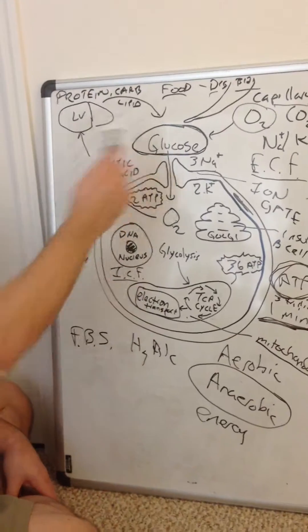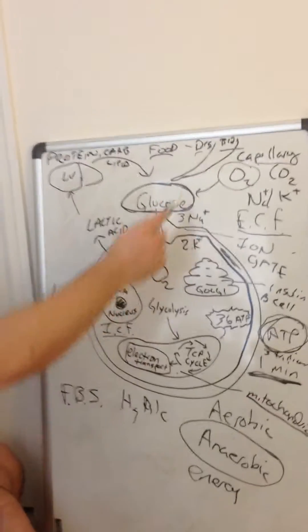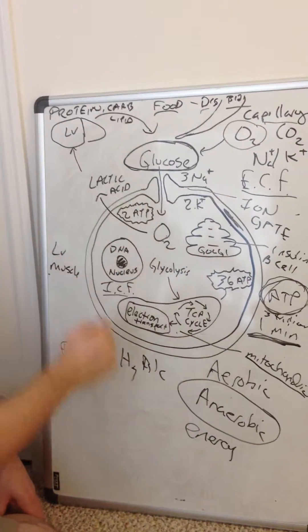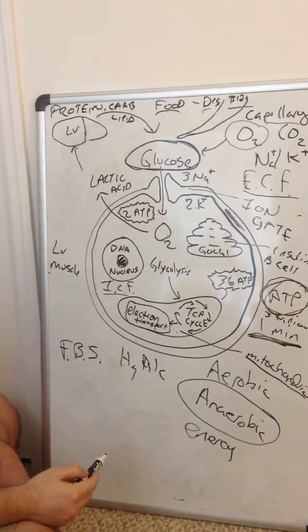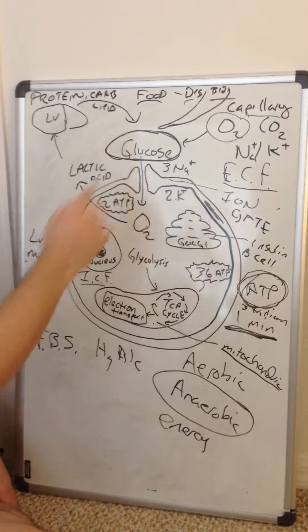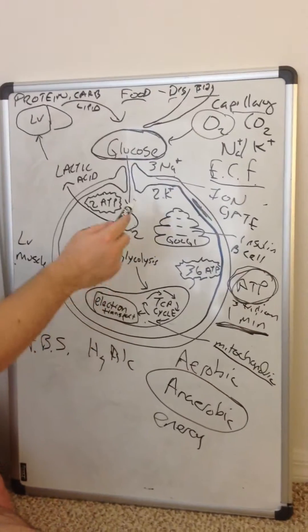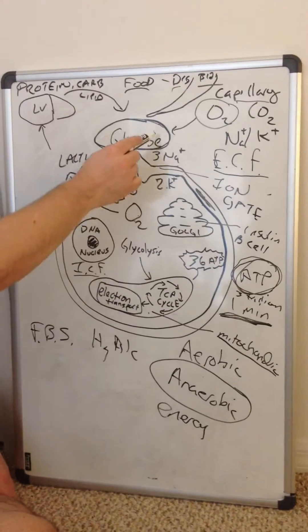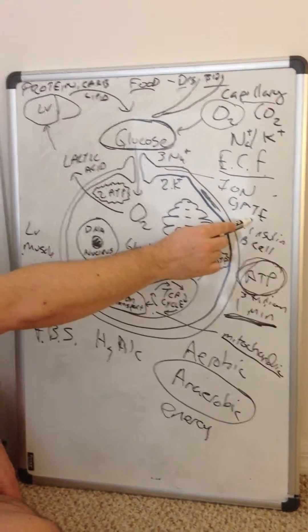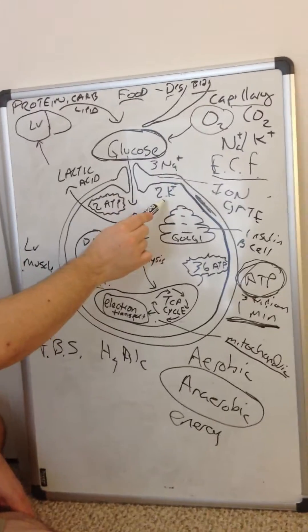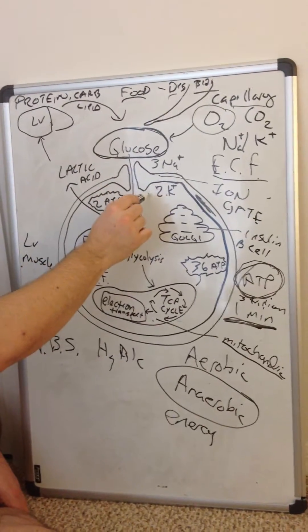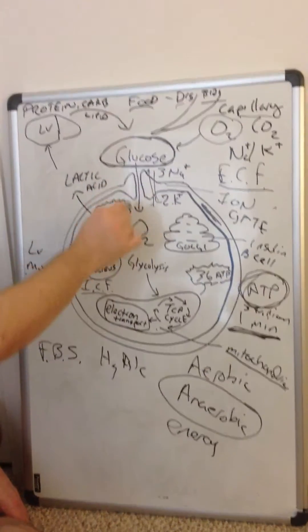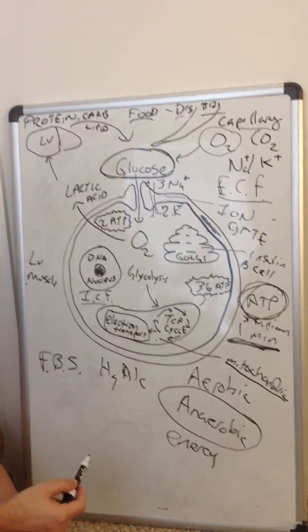So how do we get the glucose molecule from the ECF into the cell? Well the cell wall is what? A membrane. And it's not permeable to just anything. Otherwise bacteria could come in and kill any cell wall, a virus. So we have an interesting process called an ion gate. It allows three sodium and two potassium to transfer in and out while the glucose molecule is absorbed inside the cell.